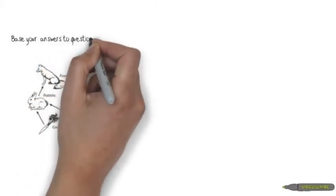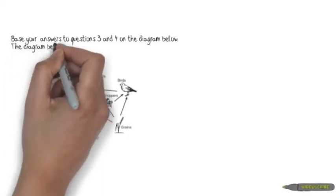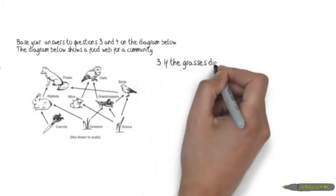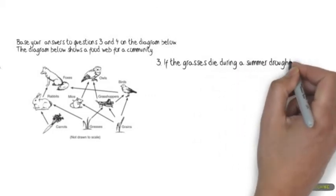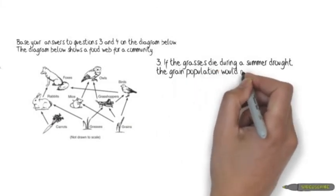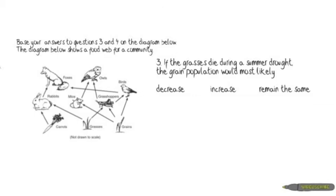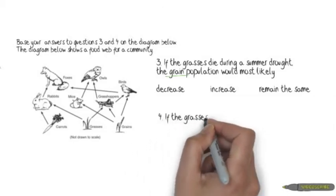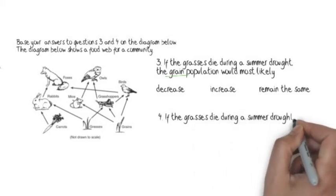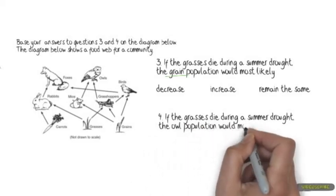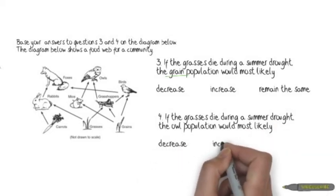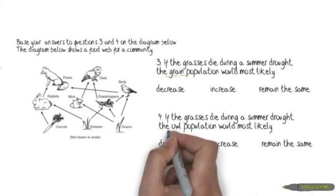Let's try a second one. Base your answers to questions three and four on the diagram below, which shows a food web for a community. Number three: if the grasses die during a summer drought, the grain population would most likely decrease, increase, or remain the same? Number four: if the grasses die during a summer drought, the owl population would most likely decrease, increase, or remain the same? Pause and when you're ready to resume, we will discuss.